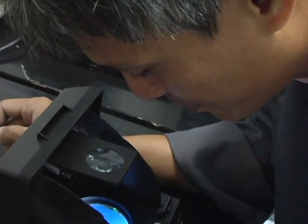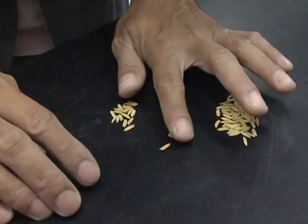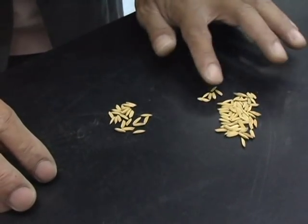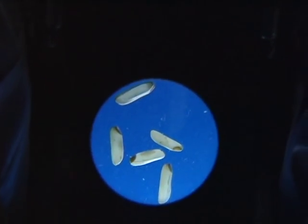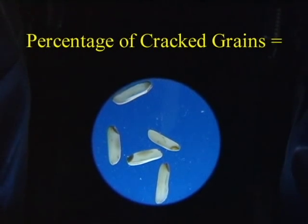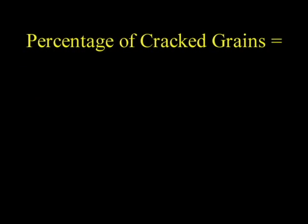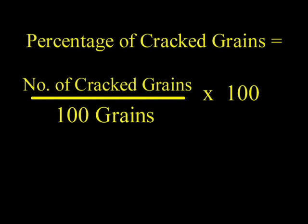Using the paddy crack detector, count the number of cracked grains in a 100-grain sample, then compute the percentage of cracked grains using this equation: the number of cracked grains divided by 100 grains, then multiply by 100 to get your percentage.